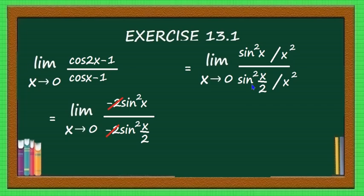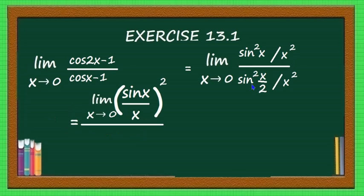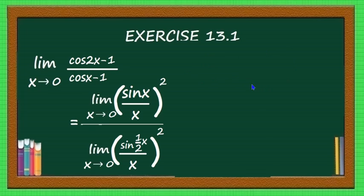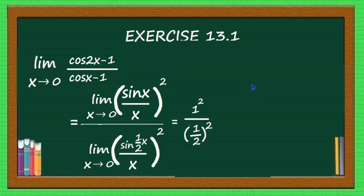This equals [limit x→0 of sin(x)/x]² divided by [limit x→0 of sin(x/2)/x]². The numerator limit of sin(x)/x is 1, so the numerator is 1² = 1. For the denominator, using limit x→0 of sin(ax)/x = a with a = 1/2, the denominator is (1/2)² = 1/4. Therefore, the answer is 1 divided by 1/4, which equals 4.